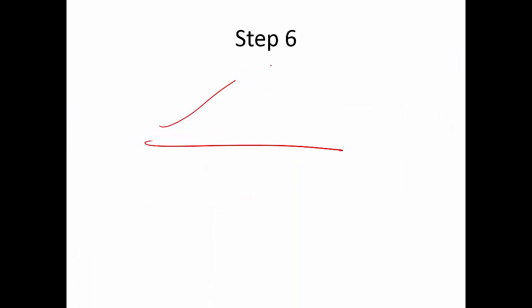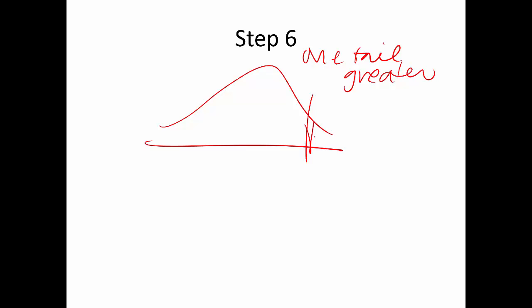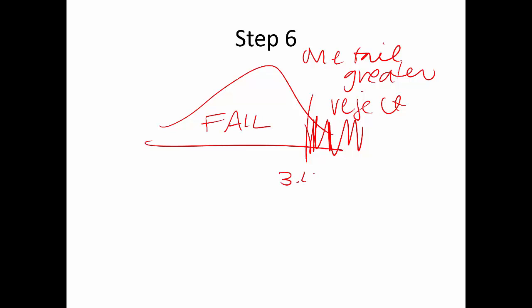Write out the cutoff score: positive 3.143 for this one-tailed positive test. Everything beyond that cutoff is the rejection region; everything below is fail to reject. This is the finish line — let's see how far our little car gets.